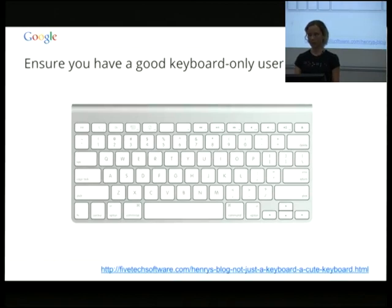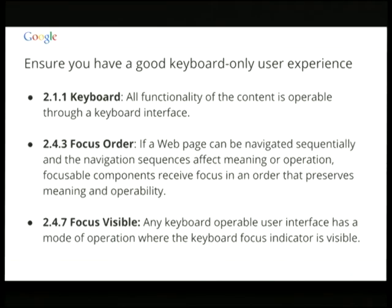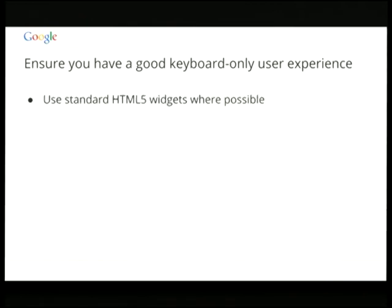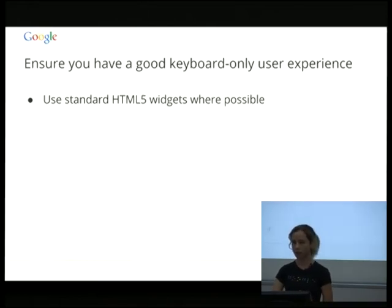Addressing accessibility — the first place to start is ensuring that you have a good keyboard-only user experience. WCAG recommendations address this: making sure it's all operable via the keyboard interface, making sure your focus order is sensible, and something a lot of people miss — making sure that focus is visible. The easiest way to do this, where possible, is using standard HTML5 widgets. Browsers will implement all of the accessibility for you by and large, because browser vendors have to comply with accessibility requirements and it only needs to be implemented once in the browser.